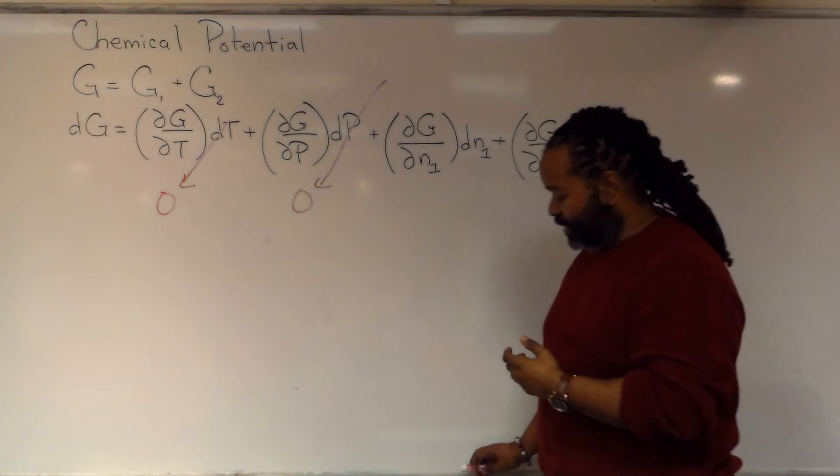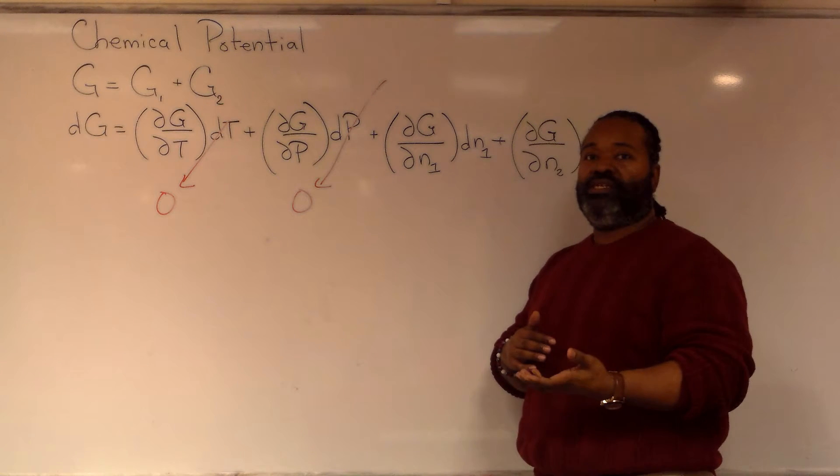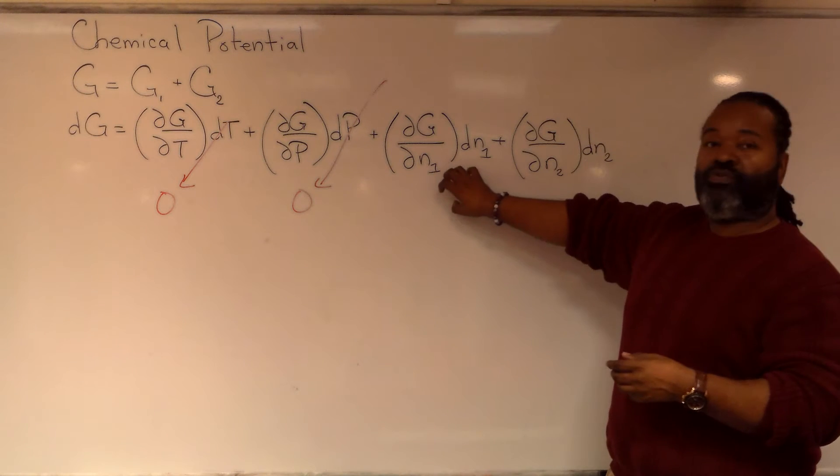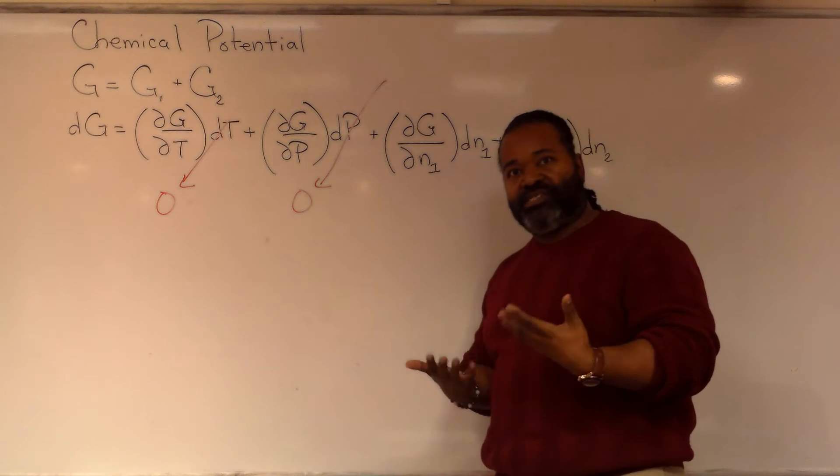And now all we're left with at equilibrium is a differential change in the Gibbs energy that's due entirely to changes in the number of moles in both phases. And this kind of makes sense with our basic general chemistry understanding of equilibrium in that what's really happening is that